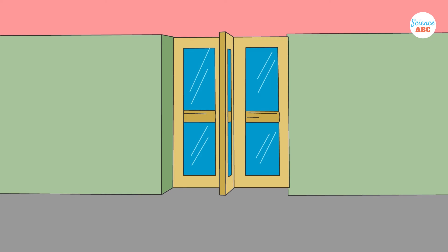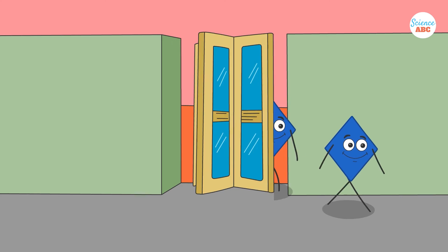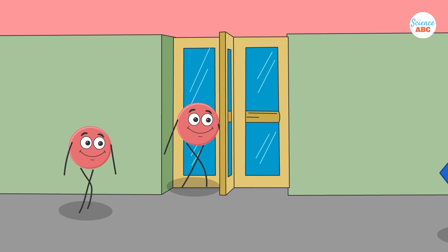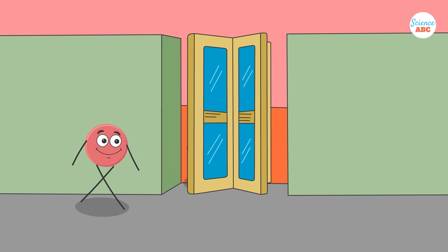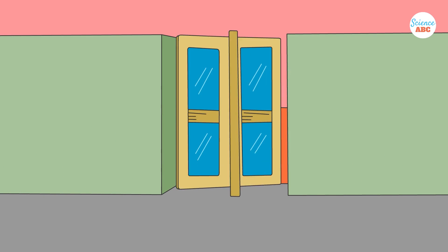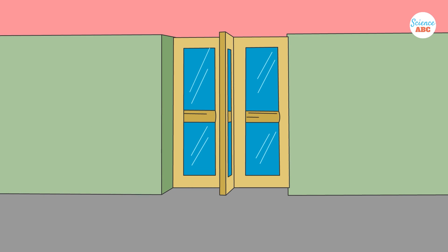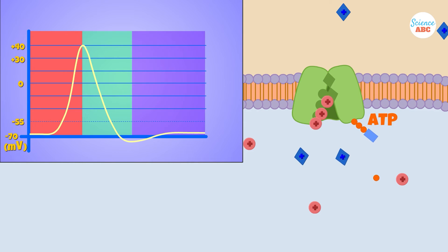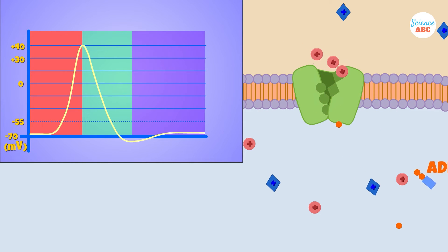These pumps act like revolving doors in buildings. They let out more sodium ions from inside the cell, while simultaneously bringing in fewer potassium ions. This brings the neuron back to its resting potential.